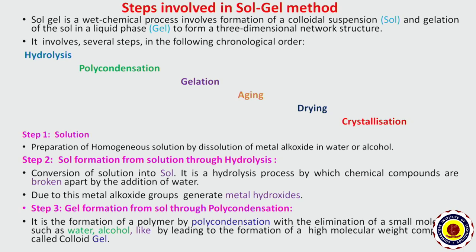First step: preparation of solution. A solution is prepared by mixing the metal alkoxide with water or alcohol. Next step: attainment of sol from solution through hydrolysis — it is the conversion of solution into sol. During hydrolysis, chemical compounds are broken apart by the addition of water, and metal alkoxide groups generate metal hydroxides.